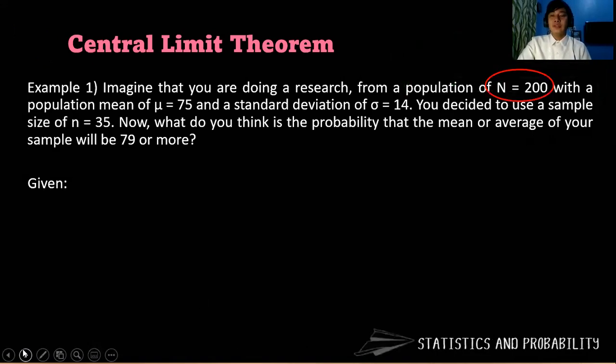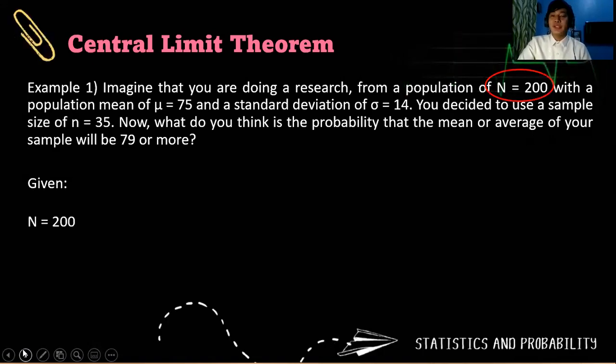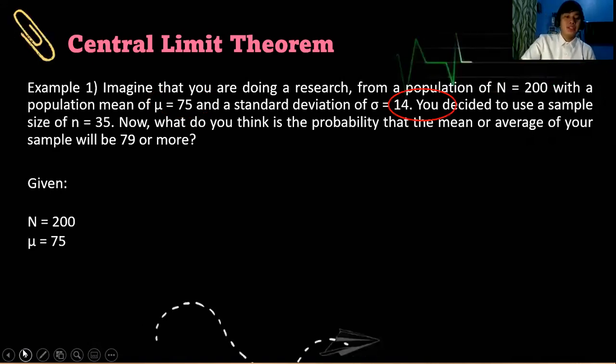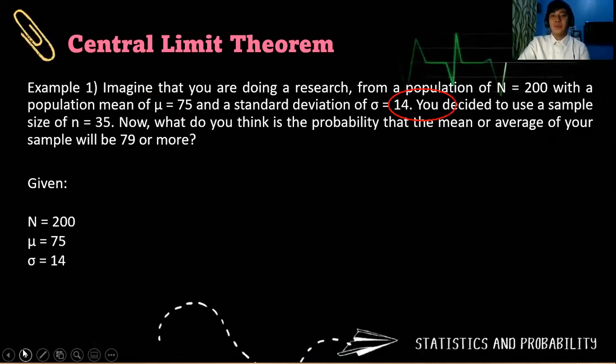For the given, we have the population size N equals 200, the population mean μ equals 75, sigma which is 14, the population standard deviation.